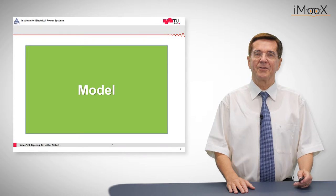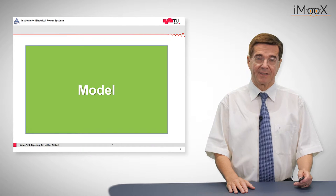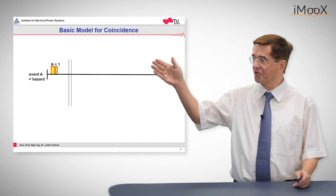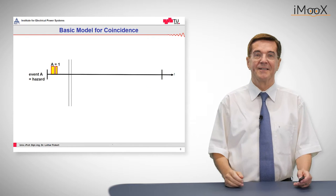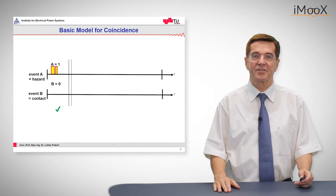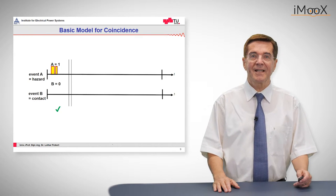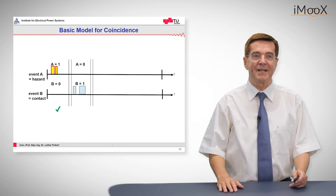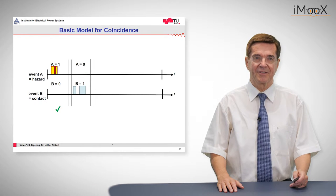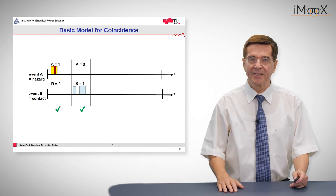Now let's see about the model how to calculate this. We have a hazard situation on top, the event A is the hazard that may occur but there is no contact, so this is safe, nothing will happen. The same occurs if it is vice versa, that means we have no hazard but a person is present, so nothing will happen again and the situation is safe.